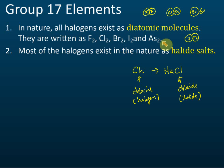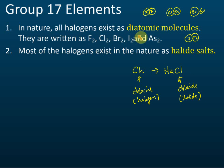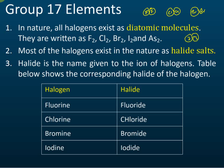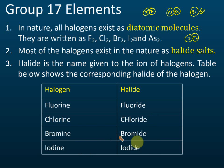Fluorine, chlorine, bromine, iodine, and astatine are halogens, but after they react they become ions — for example, chloride ion — and these ions are called halides. That's the difference between halogens and halides. All group 17 elements can react to form halide salts. A table shows the corresponding halides: fluorine becomes fluoride, chlorine becomes chloride, bromine becomes bromide, and iodine becomes iodide.